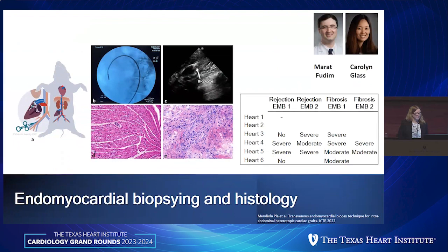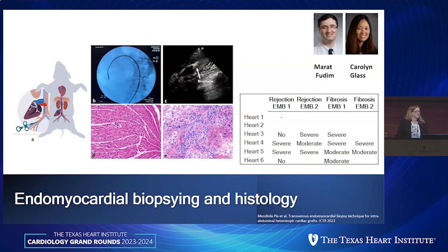We've also developed the technique of performing transvenous endomyocardial biopsy for heterotopic heart transplants in the abdomen, done by interventional cardiologist Marat Fudum and cardiac pathologist Carolyn Glass at Duke. We recently published an article on this and are confident and comfortable performing this technique regularly. We'll be doing this in ongoing animals as well as in our rejection studies with the therapeutic.